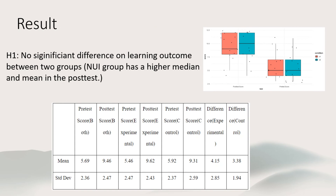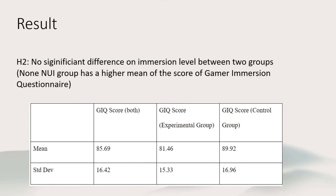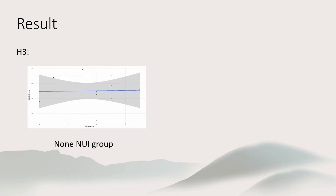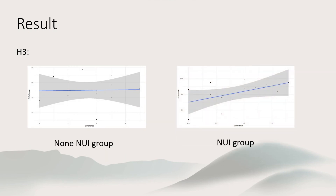The results show that there is no significant difference between the two groups in learning outcome. Looking at the box plot below, we can see the distribution of data is similar in both groups, while the natural user interface group has a higher median and mean in the post-test. There is also no significant difference between the two groups in immersion level, while the non-natural user interface group has a higher mean on the game immersion questionnaire. As for the correlation, there is no linear correlation between the two outcomes in the non-natural user interface group, while there is a moderate linear correlation in the natural user interface group.